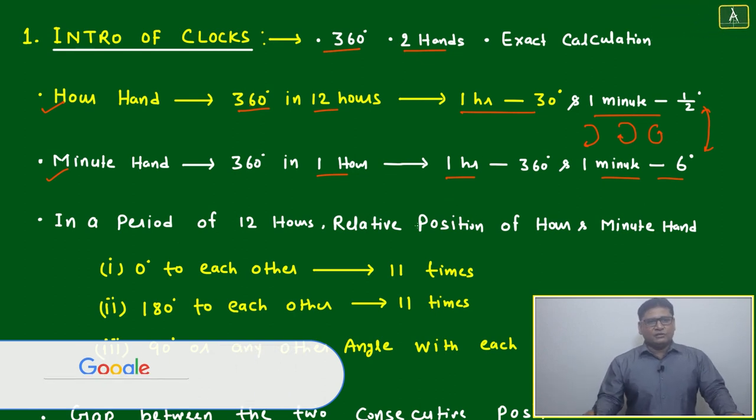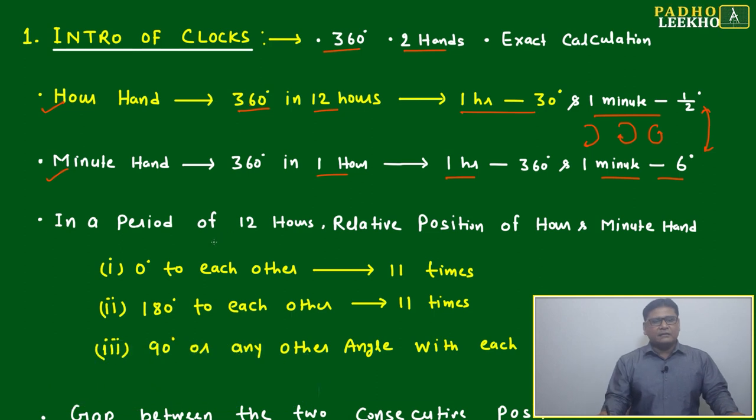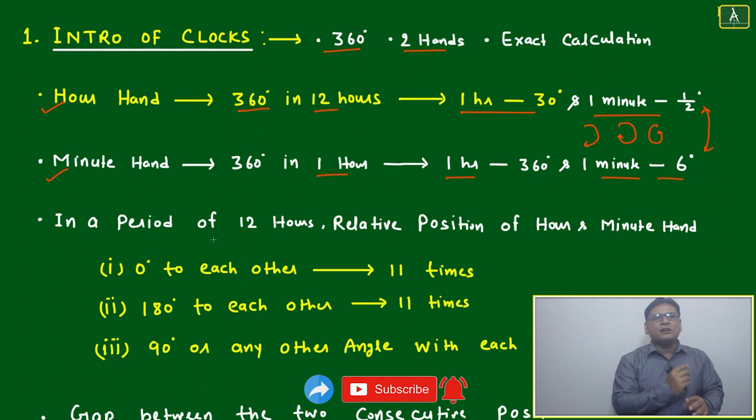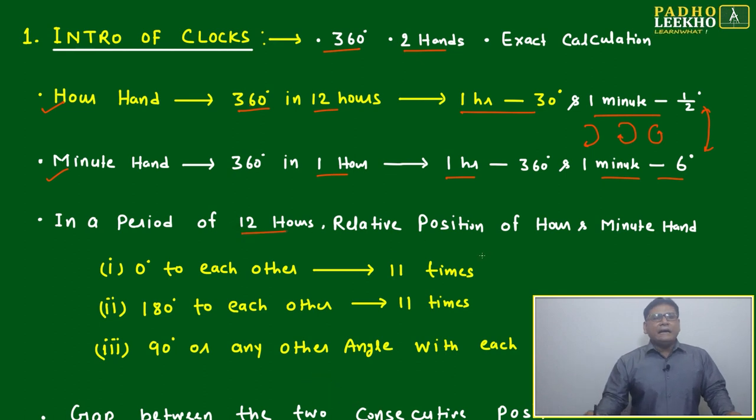Now we will look at this in a different way. How many times will it be matching to each other? How many times is it opposite to each other? And how many times is it perpendicular to each other? In a period of 12 hours, relative position of hour and minute hand at 0 degrees to each other will be 11 times. Keep this in mind - small thing. How many times in 12 hours will they be at 0 degrees to each other, means exactly coming and meeting each other? This is 11 times.